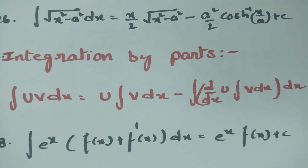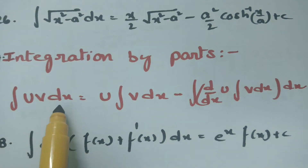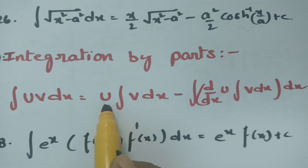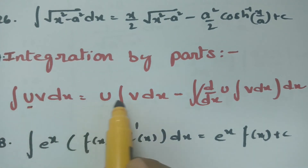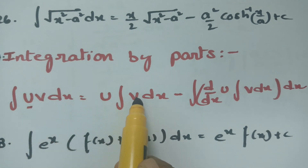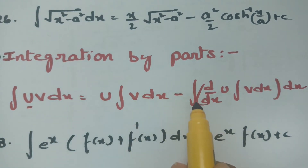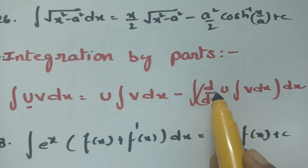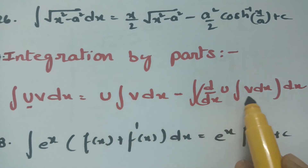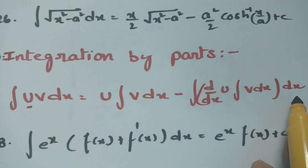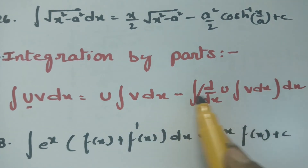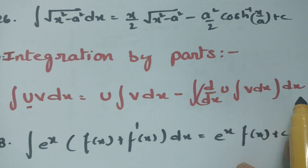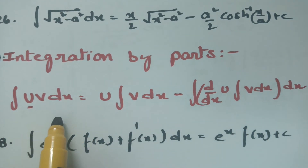Integration by parts is most important: integral of u·v dx equals u times (integral of v) minus integral of [derivative of u times integral of v] dx. That is, we leave u and integrate v, then take the derivative of u and integrate v again, with the whole expression under the integral sign.